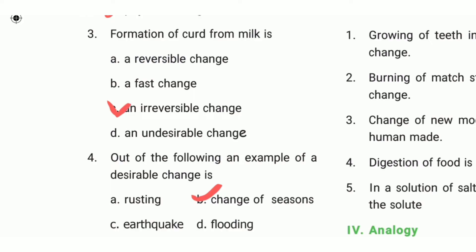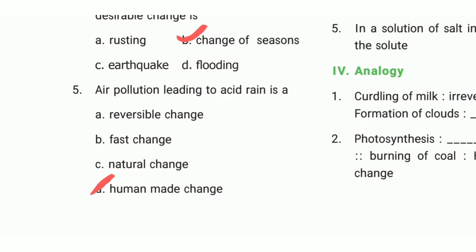Fourth question: out of the following, an example of a desirable change - the answer is B, change of seasons. Fifth question: air pollution leading to acid rain - the answer is D, human-made change.